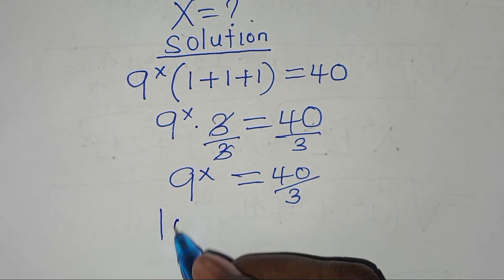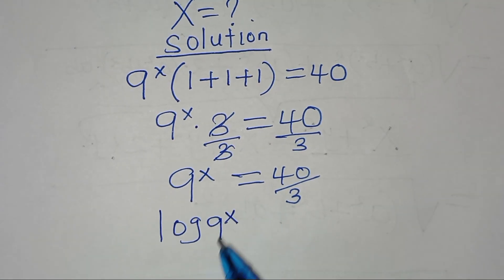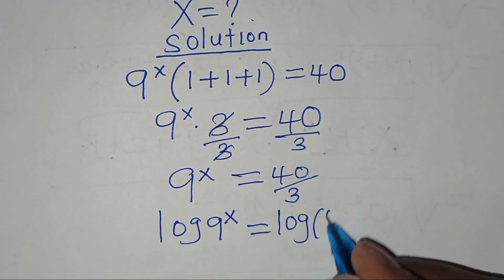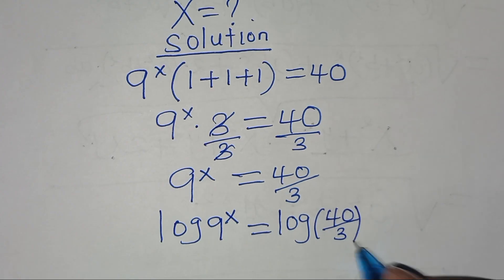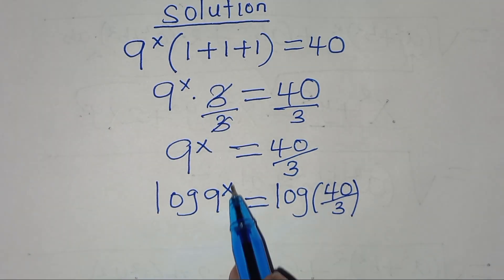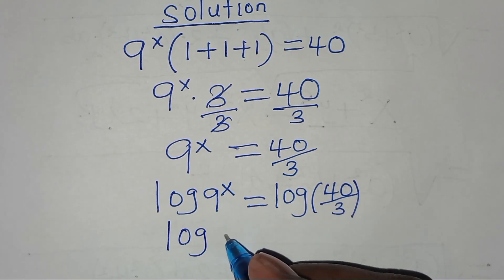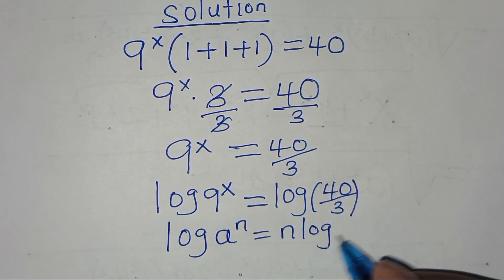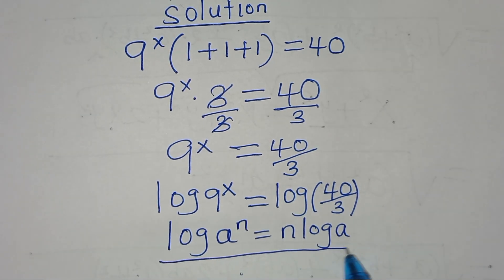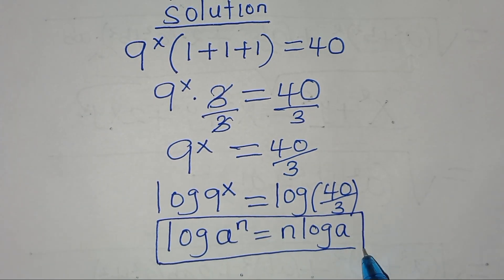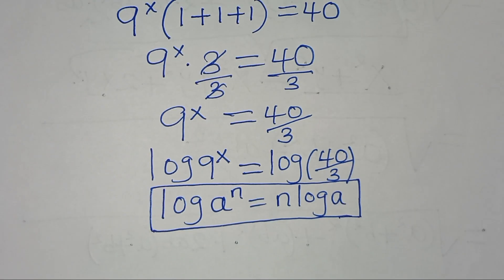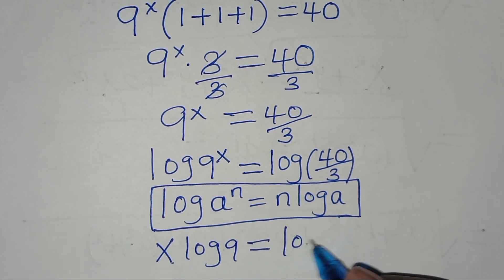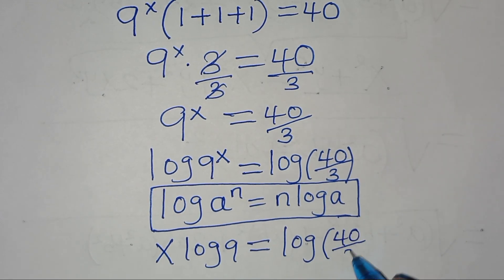To solve for x, we introduce logarithm on both sides. So we have log of 9 to the power x equal to log of 40 over 3. Now log of 9 to the power x is in the form of log of a to the power n, which we can express as n times log a. Applying this power rule, log 9 to the power x becomes x times log 9, equal to log of 40 over 3.